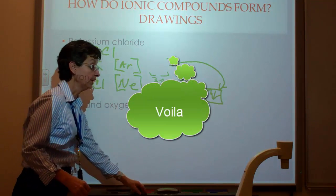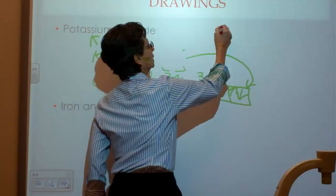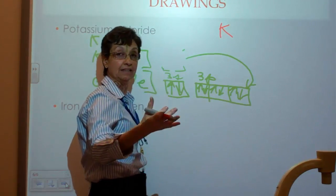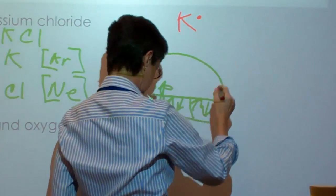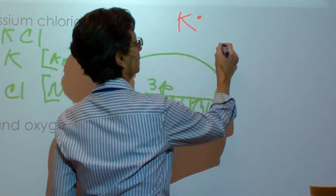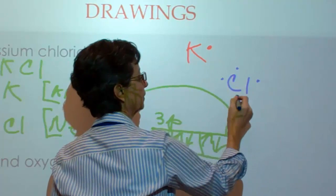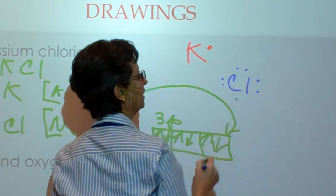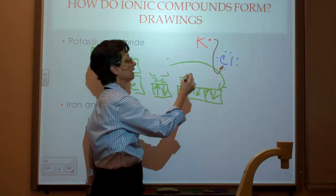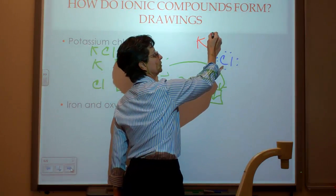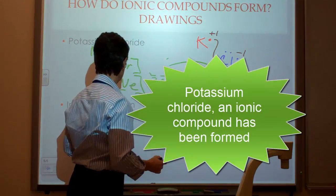Now, we can do the same thing by using the Lewis dot symbols. I'm going to place the K here, and the valence electrons is only 1. Then, I'm going to say Cl has 7 valence electrons, 2, 3, 4, 5, 6, and 7. And I can draw the electron going to the Cl. Now, this becomes plus 1 in charge. This becomes negative 1 in charge.